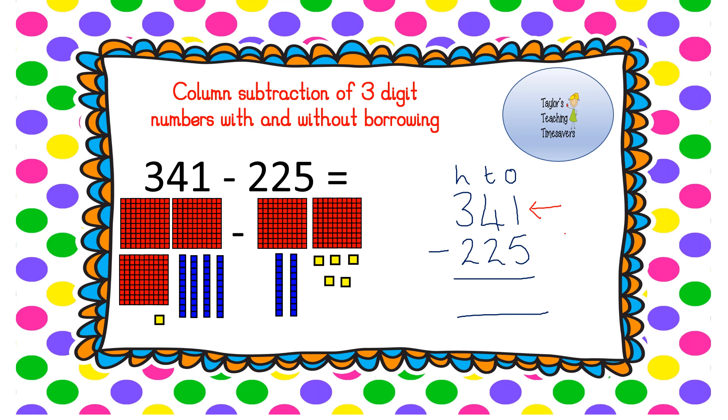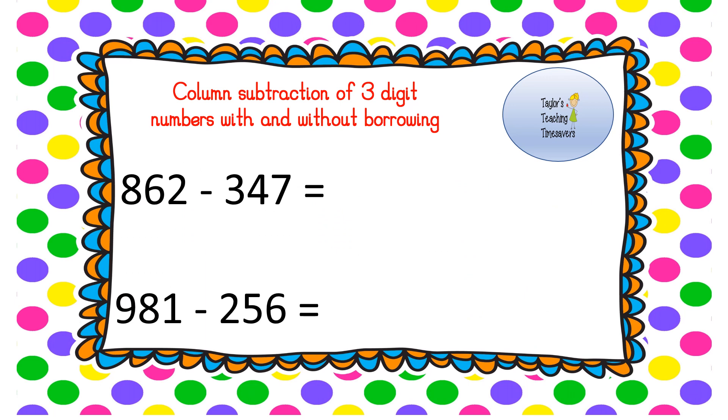Remember if you had that one sweet and you wanted to give five away to your friends, you couldn't because you don't have five to give away. So what do we do? We go into that tens column. Remember we're going to borrow a 10, so we knock down our 40 to 30, and that 10 we've borrowed goes in our ones column so it now looks like 11 take away 5. So 11 take away 5 is 6. 30 take away 20, or 3 take away 2, is 1, it's 10. And 300 take away 200 is 100.